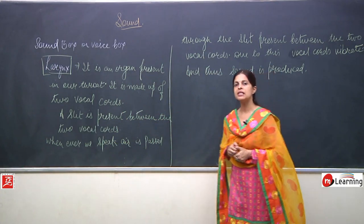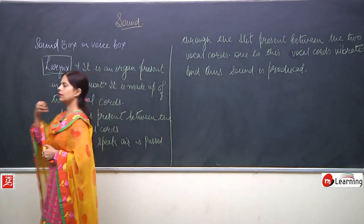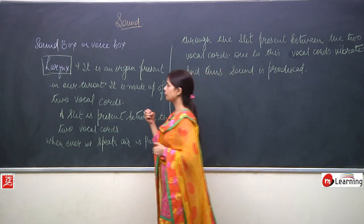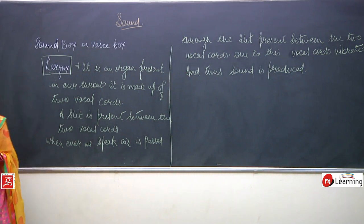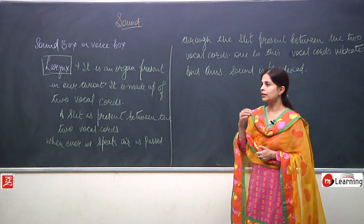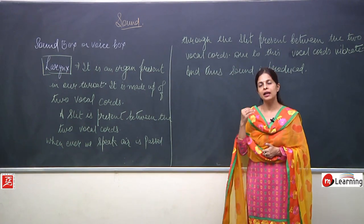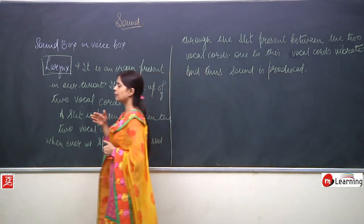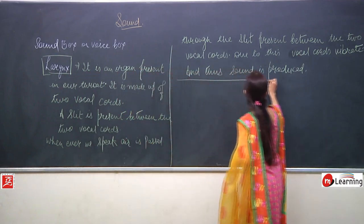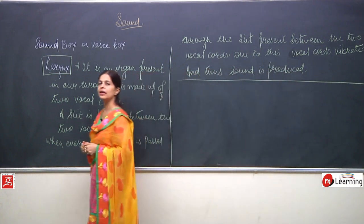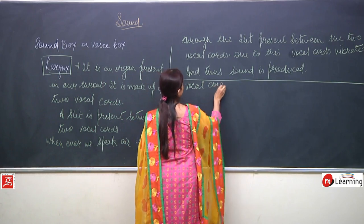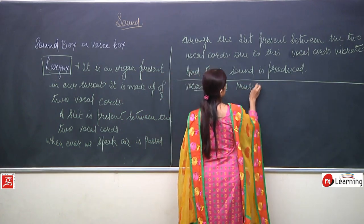Which kind of sound is produced depends upon how the muscles are attached to the vocal cords. If the muscles attached to the vocal cords are very tight and thin, they will give high frequency sound — meaning the pitch of the sound will be very high. Now, how muscles affect the voice or sound is what we are talking about.